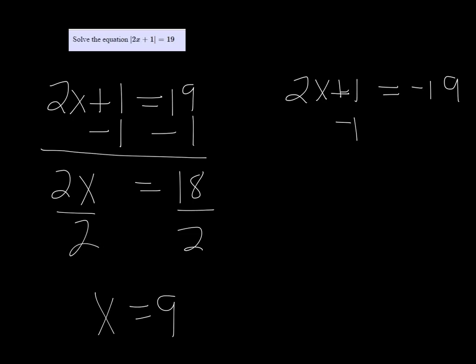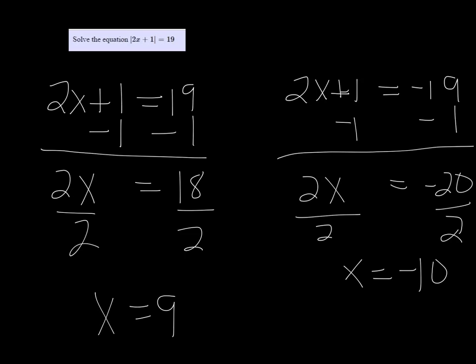In the other equation, I proceed the same way, subtract 1, but the right side is going to be negative 20, divide by 2 on both sides, x is equal to negative 10. So the two solutions are 9 and negative 10.